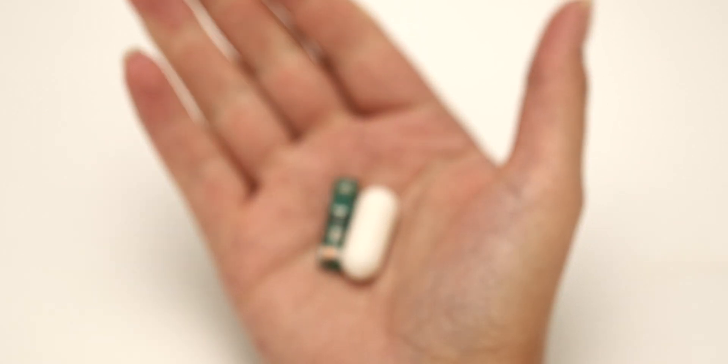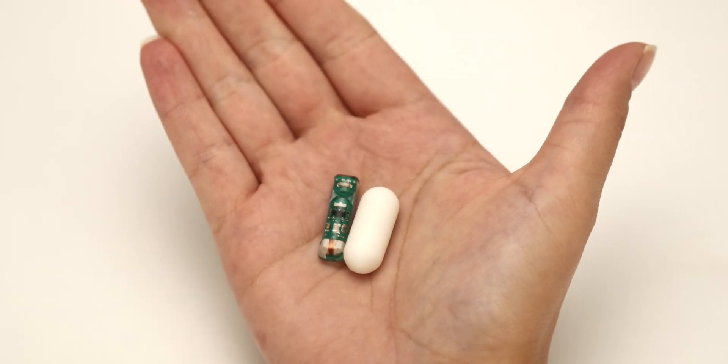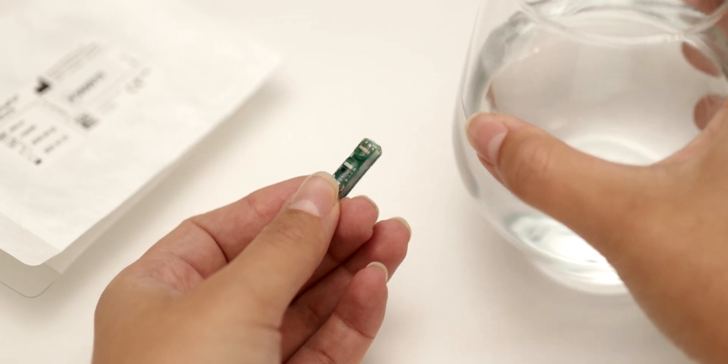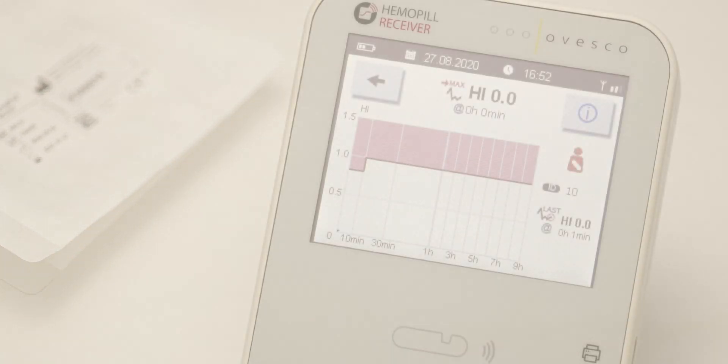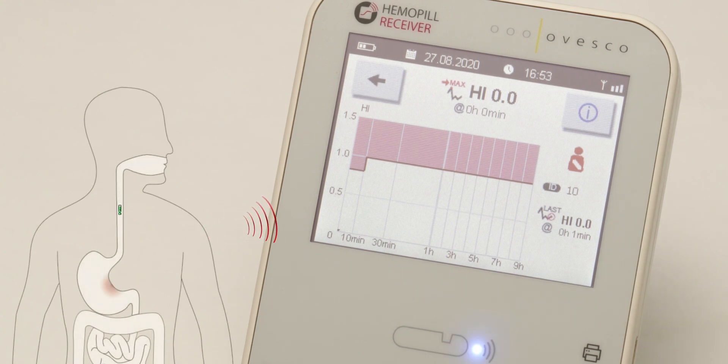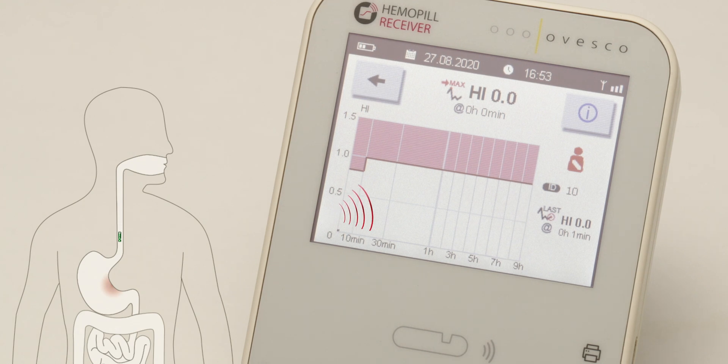Since the Hemopill capsule is only about half the volume of conventional video capsules, it is easy to swallow. After the patient has swallowed it with water, it moves through the digestive tract. The system detects swallowing of the capsule, and one minute later, the recording of measurement starts.